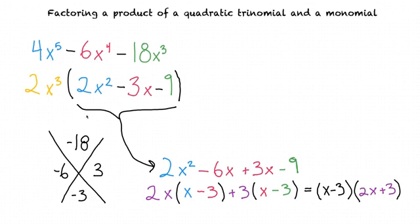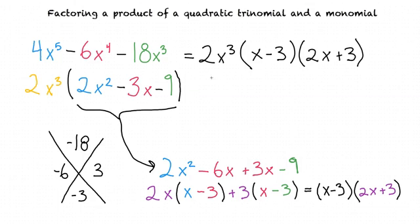If that process of going from a quadratic equation to the factored version is not familiar to you, review the topic factoring a quadratic with leading coefficient greater than 1. Now we can replace this expression with this one in our equation to see that our final answer is 2x cubed times x minus 3 times 2x plus 3. And now our original expression is completely factored.